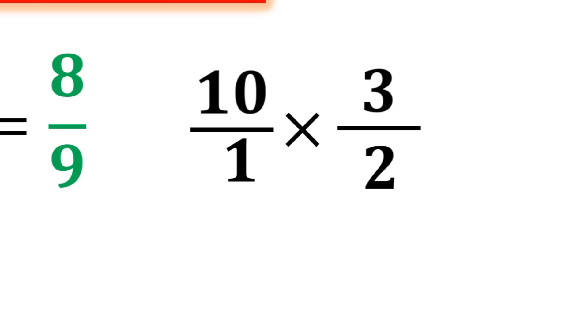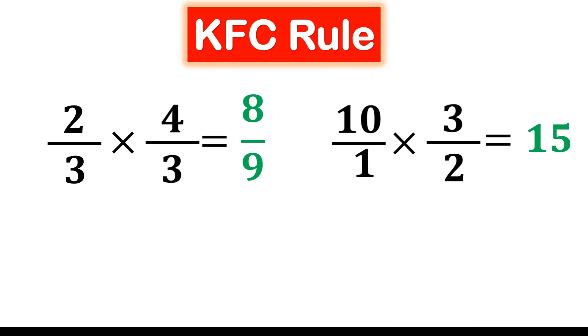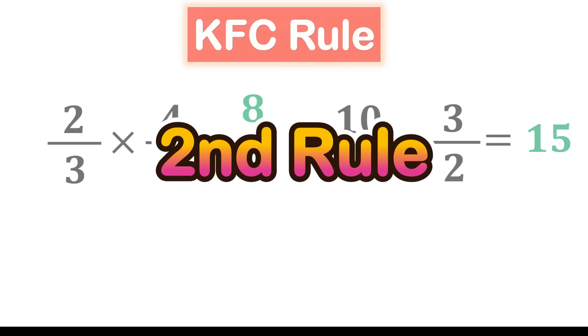Again, we keep ten over one, we flip two thirds to three halves, and we change division to multiplication. Ten over one multiplied by three over two equals thirty over two, which simplifies to fifteen. Now that we know how to properly divide fractions, we're ready for the second rule.